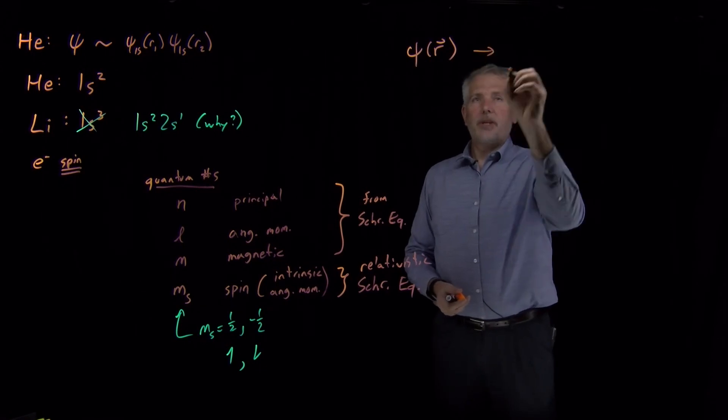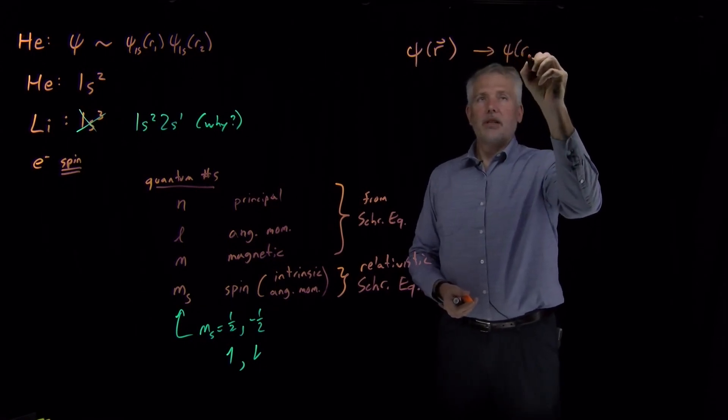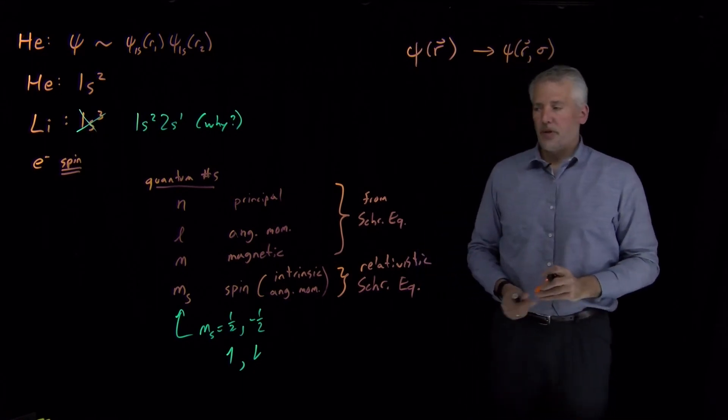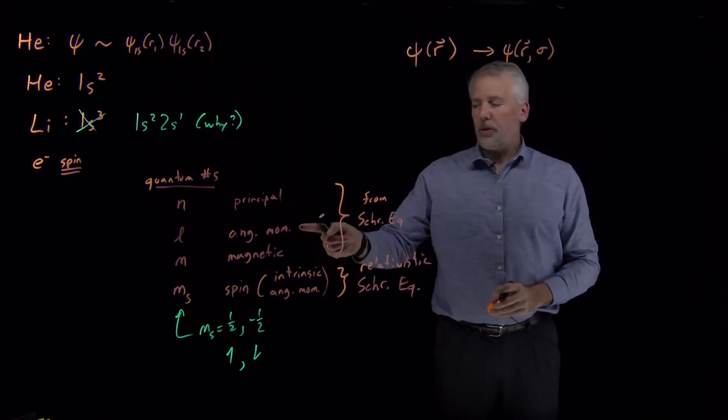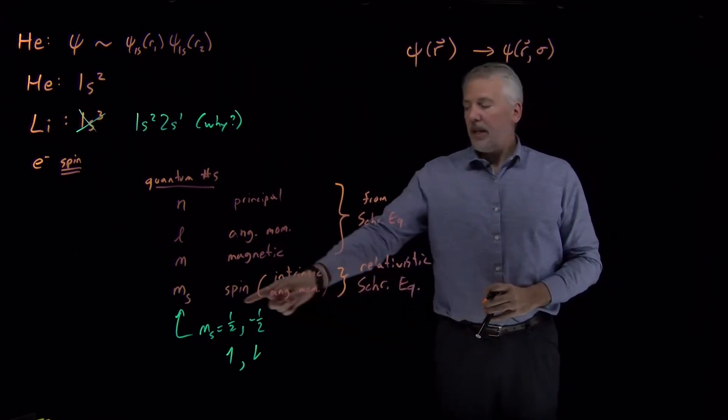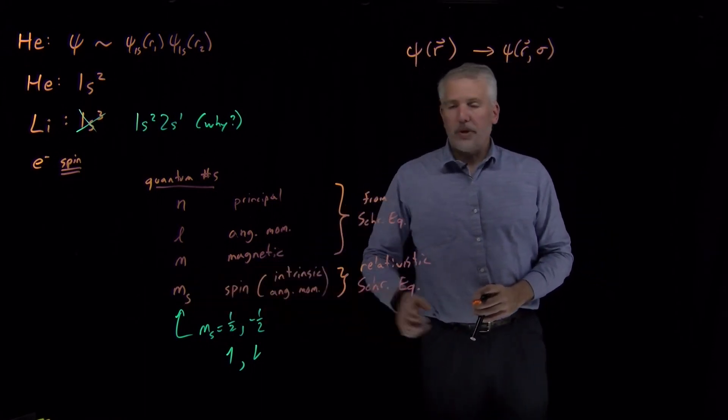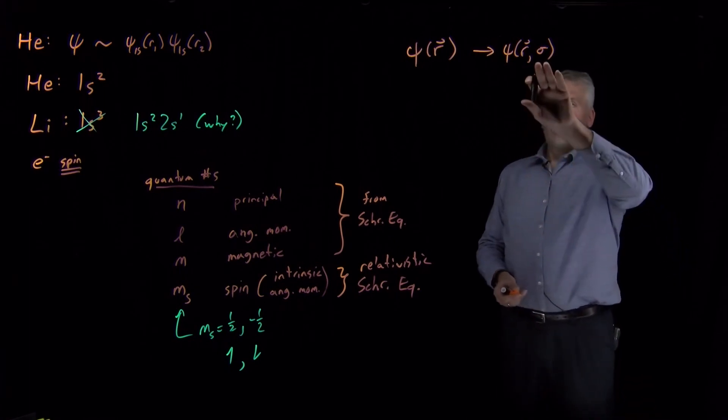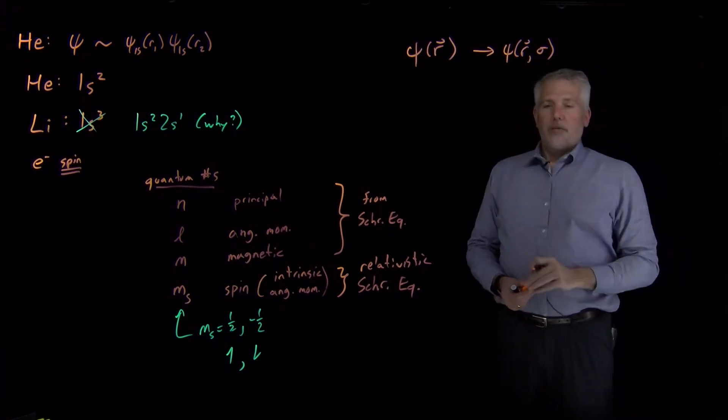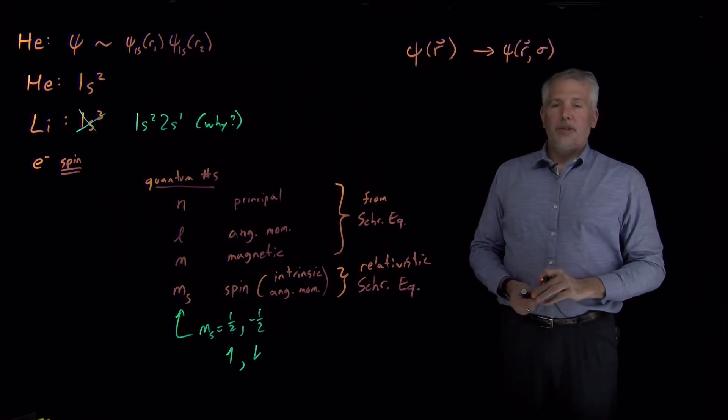When we need to talk about spin, we need to add a fourth coordinate. These three quantum numbers arise from the three coordinates x, y, and z, or r, θ, and φ. This fourth quantum number arises when we consider a fourth coordinate, which is the spin coordinate.